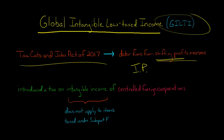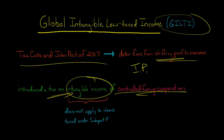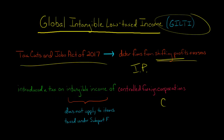I'm talking about trademarks, copyrights, patents, and so forth with overseas companies. What Congress did was they introduced a tax on intangible income of controlled foreign corporations. If you don't know what a controlled foreign corporation is, they're also known as CFC for short.